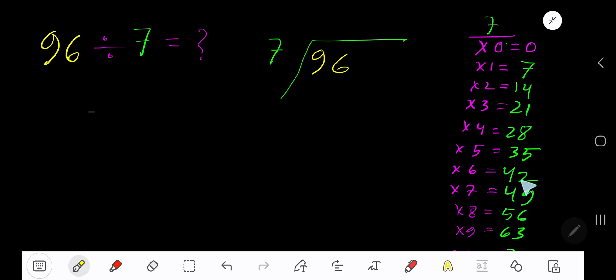21 plus 7 is 28. This process continues. 7 goes into 9 how many times? 1 time. 1 times 7 is 7. Subtract to get 2, bring down the next digit to get 26. 7 goes into 26 how many times? 3 times. 3 times 7 is 21. Subtract to get 5. So our answer is 13 remainder 5.